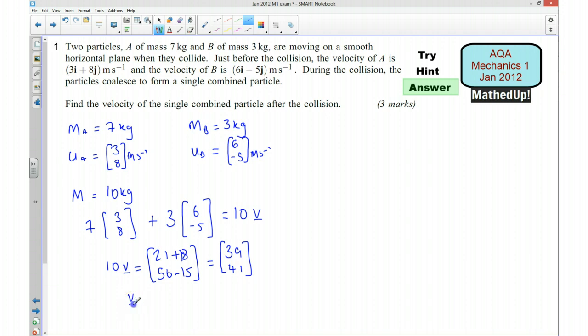Which tells me that our velocity of the single combined particle is going to be 3.9 and 4.1 meters per second.